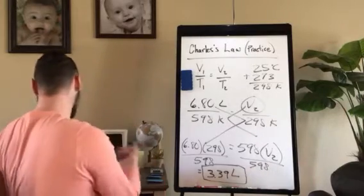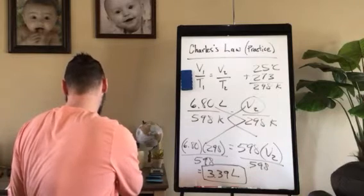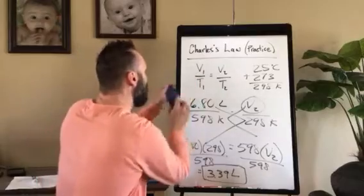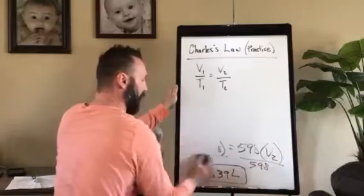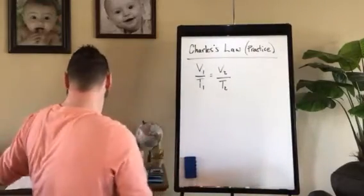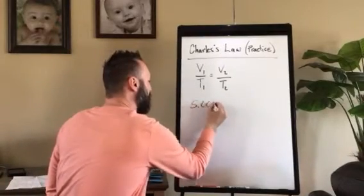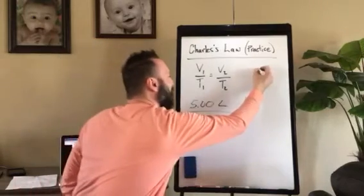Number two, very similar, we're going to be solving for V2, our volume of our second gas, pressure remains constant. So we can leave that formula. If the pressure remains constant, we're going to use V1 over T1 equals V2 over T2. So it says exactly five liters of air at negative 50 degrees Celsius.